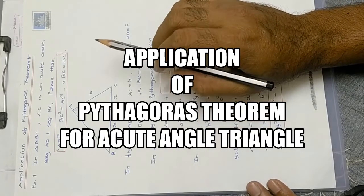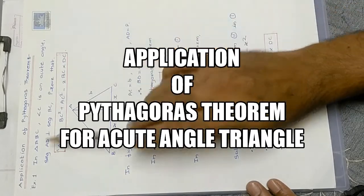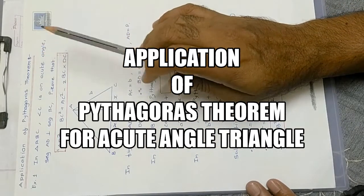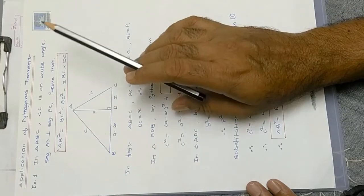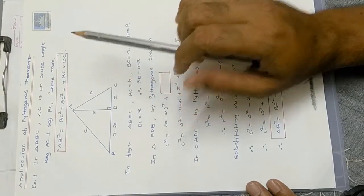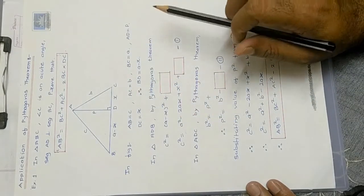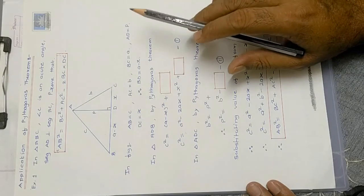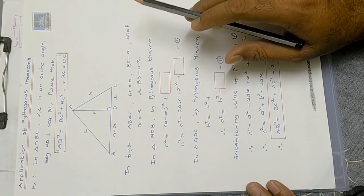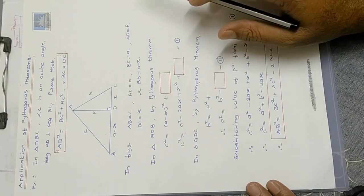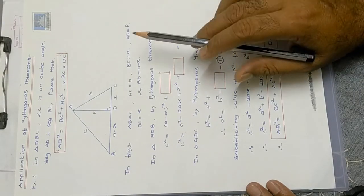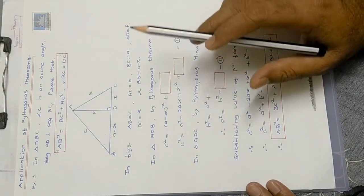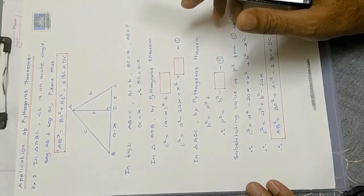Welcome back, students. Now let us look at the application of Pythagoras theorem. As mentioned earlier, Pythagoras theorem is applicable to the right angle triangle, but we can also use it for the other two types of triangles — the acute angle triangle as well as the obtuse angle triangle.